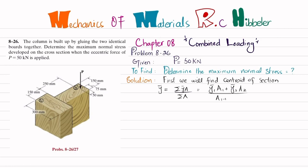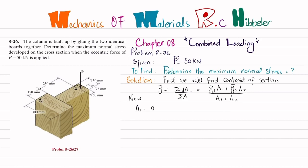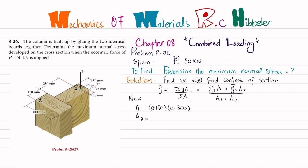Now we find A₁ and A₂. A₁ corresponds to board one: width = 150 mm = 0.150 m, height = 300 mm = 0.300 m. A₂ corresponds to board two: width = 300 mm = 0.300 m, height = 150 mm = 0.150 m.